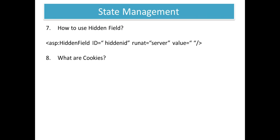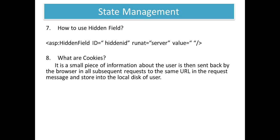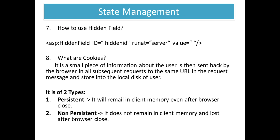Our next question is: what are cookies? A cookie is a small piece of information about the user that is sent back by the browser in all subsequent requests to the same URL in the request message, and is stored in the local storage of the user. There are two types of cookies: persistent cookies and non-persistent cookies. Persistent cookies remain in client memory even after the browser is closed, while non-persistent cookies do not remain in client memory and are lost after the browser is closed.